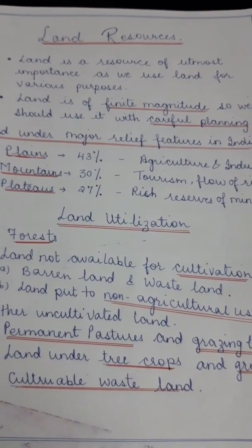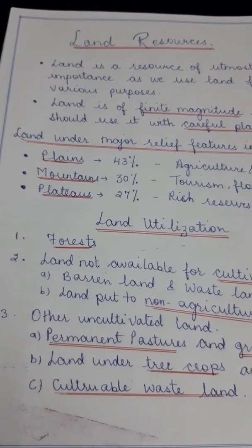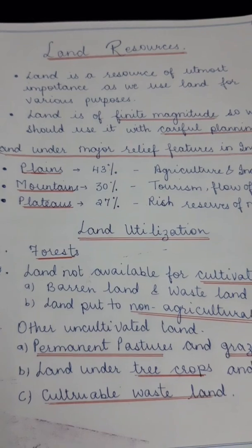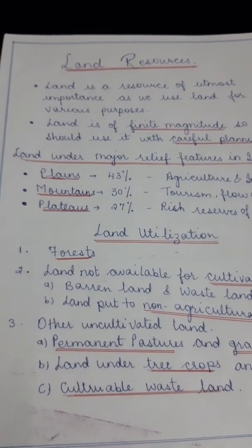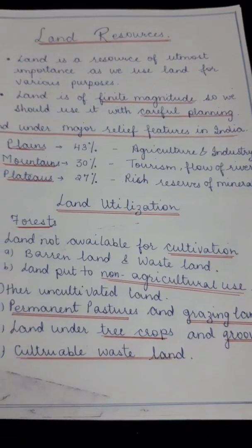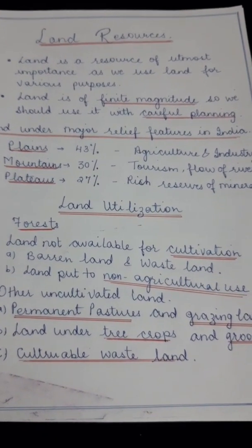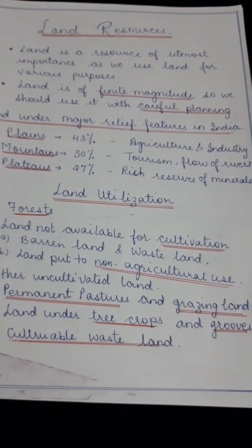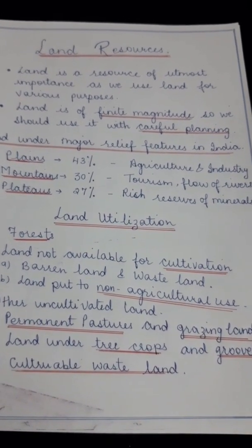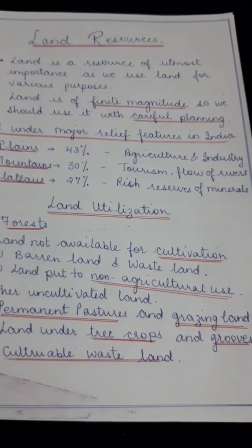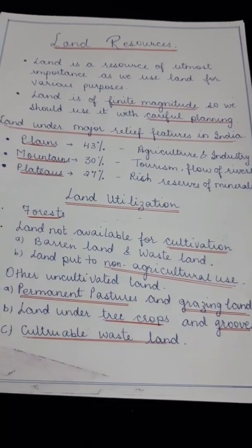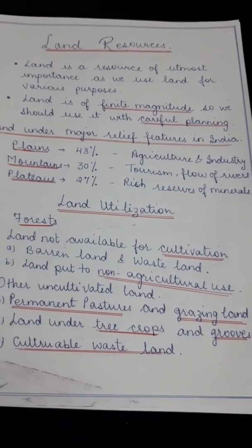The next topic is land utilization — the various uses land is put to. The first one is forests; a large area of land in any country should be under forest. Number two is land not available for cultivation, which is not under farming or agriculture — that includes barren land, wasteland, desert land, and rocky land where no use is done. The third is land put to non-agricultural uses — useful land but not for agriculture, such as settlements, streets, and roads.